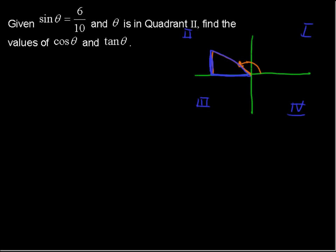So let's just fill in these numbers here with the numbers that are given to us. So if sine of theta is 6 over 10, and sine of an angle is the opposite over the hypotenuse, that means the opposite, this leg, is 6, and the hypotenuse is 10.